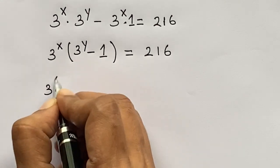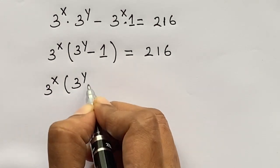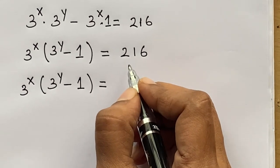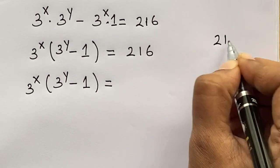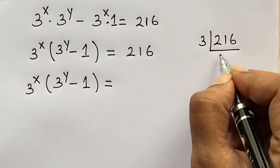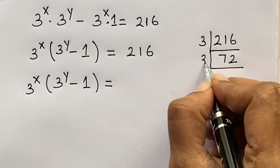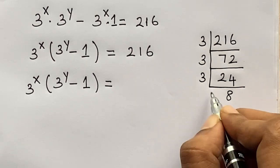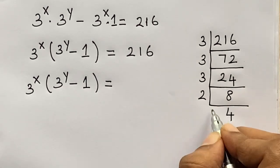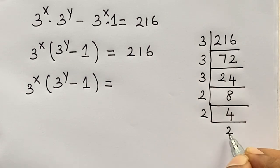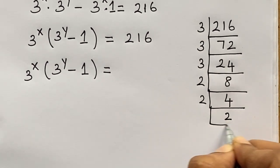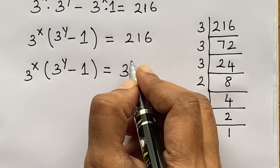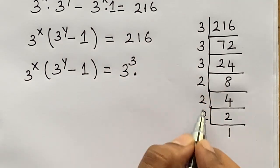Now, 3 raised to the power x times of 3 raised to the power y minus 1 equals 216. Let's find the prime factorization of 216. Dividing by 3 we get 72, 72 divided by 3 is 24, 24 divided by 3 is 8, 8 divided by 2 is 4, 4 divided by 2 is 2, and 2 divided by 2 is 1. So 216 can be written in the form 3 raised to the power 3 times of 2 raised to the power 3.